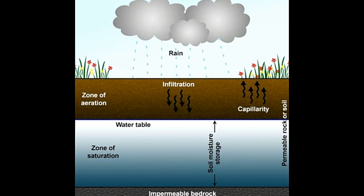Thus, the zone of aeration forms the top layer through which water penetrates, and the saturation layer is where it gets held and stored. Both zones work together to store water underground.